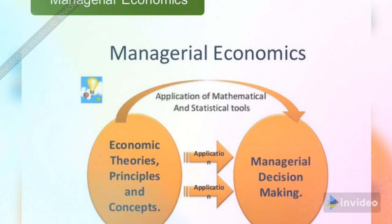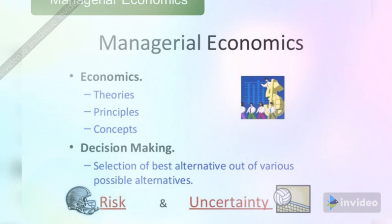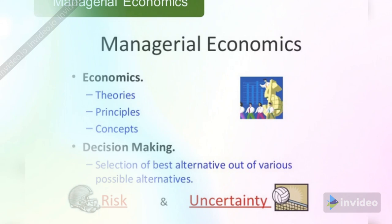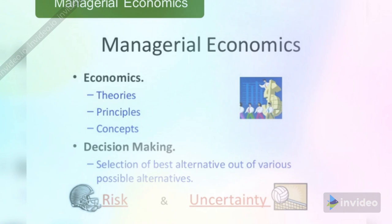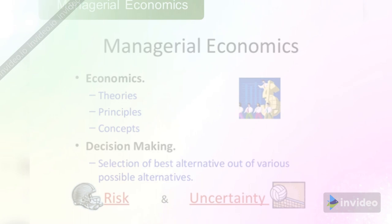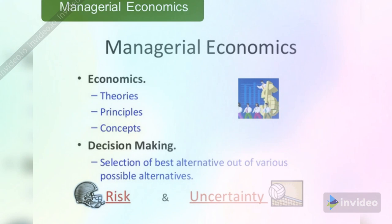In the basic concepts, we need to understand that in management study, economic theory and concepts are important. In the decision making process, managers need to select the best alternatives out of various possible alternatives. There are many alternatives that exist, and the best alternative from a managerial decision making perspective is to see the solution and mitigate the problem. Two factors are involved: one is risk and the other is uncertainty.